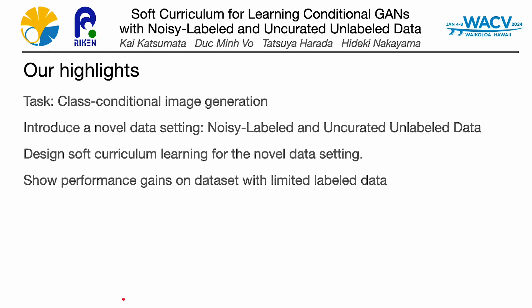Before we delve deeper into the specifics, let's take a moment to overview the key highlights. In this study, we focus on the data efficiency aspect of conditional image generation. To reduce labor effort for building datasets, we introduce a novel data assumption consisting of noisy-labeled data and uncurated unlabeled data. We then design a novel soft curriculum learning method. The soft curriculum selects useful training samples without a threshold using a weighting mechanism. Our comprehensive experiments show performance gains, including robustness to label noise and strong results on challenging benchmark datasets with limited labeled data.